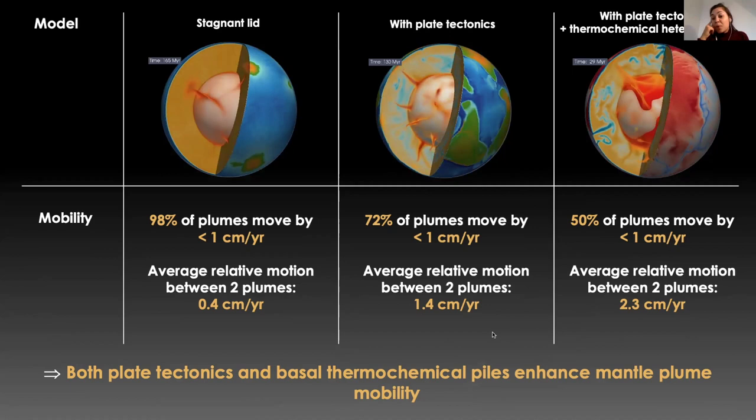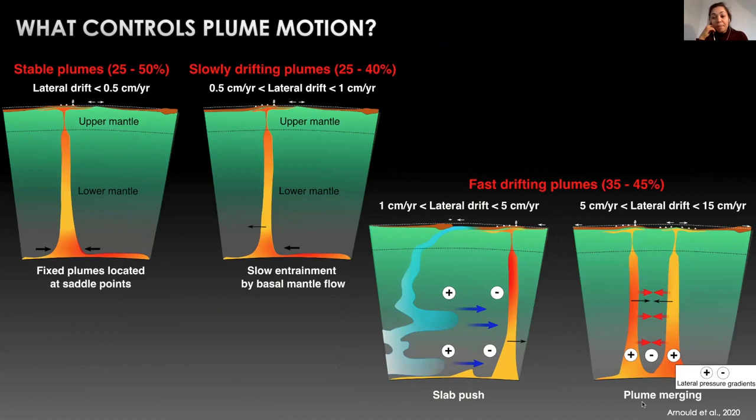We were able to distinguish four causes for plume stability or mobility. Stable and slowly drifting plumes are controlled by the dynamics of the ambient lower mantle flow. Interactions with slabs favor plume motions comprised between one and five centimeters per year, while the most rapid motions occur during plume conduit merging events, which happen every 100 million years on average in those models.